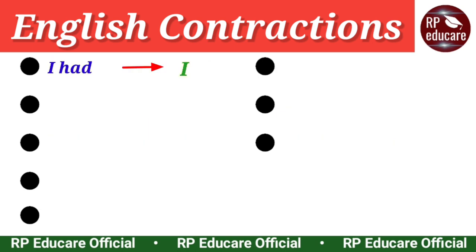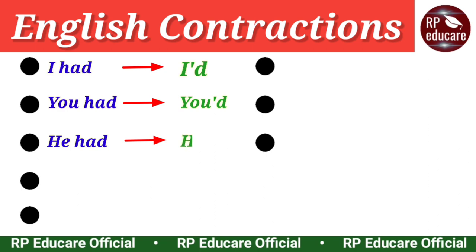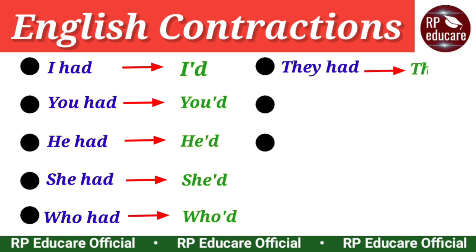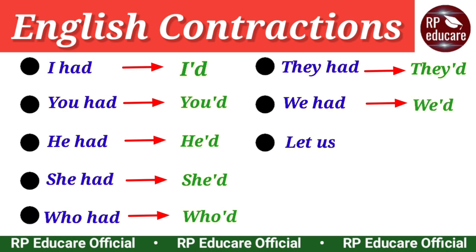I had - I'd. You had - you'd. He had - he'd. She had - she'd. Who had - who'd. They had - they'd. We had - we'd. Let us - let's.